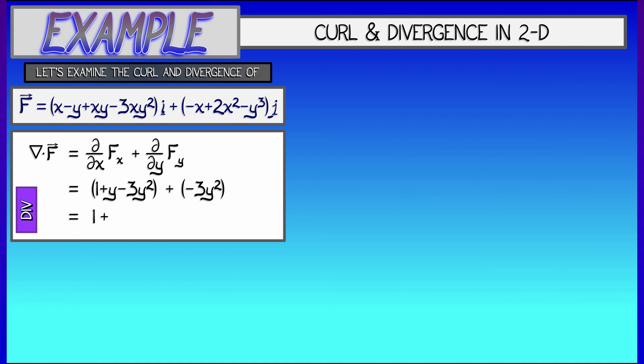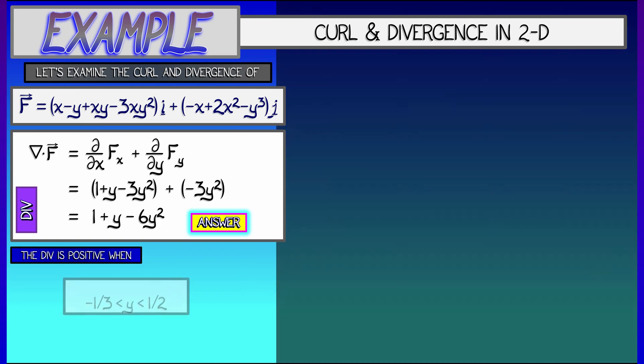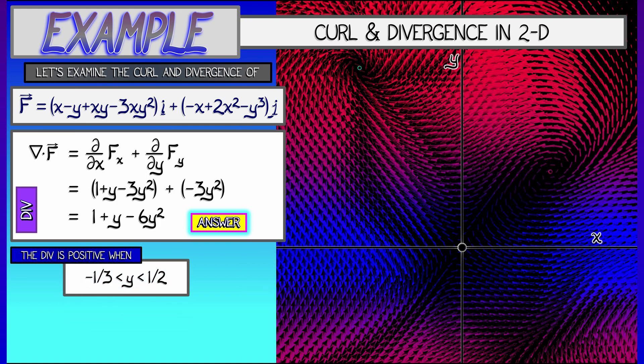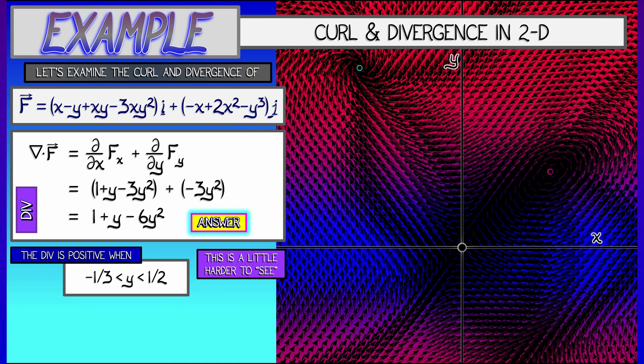Combining this together gives us our final answer. The divergence is 1 plus y minus 6y squared. And now if we think about what that vector field looks like, we can see there's this strip of positive divergence where y goes from negative one third to positive one half.